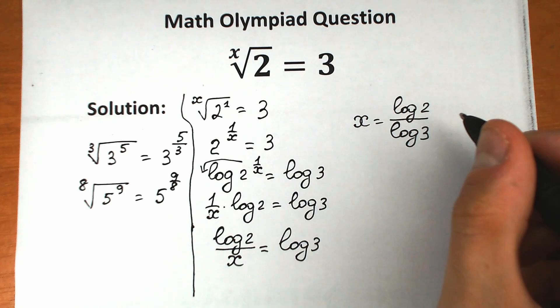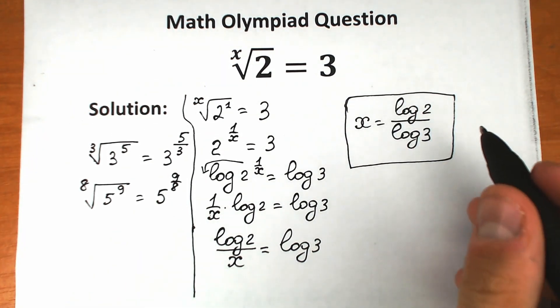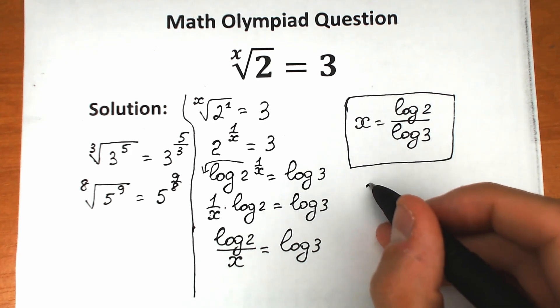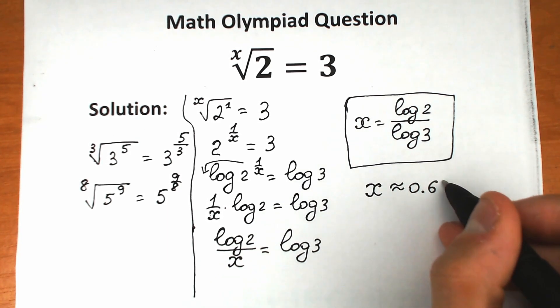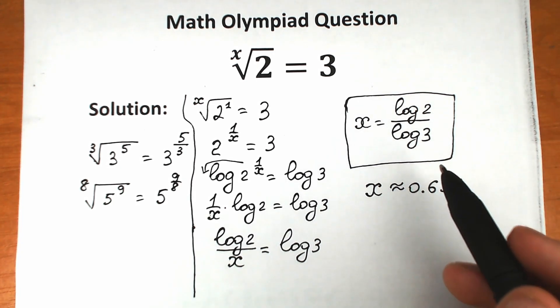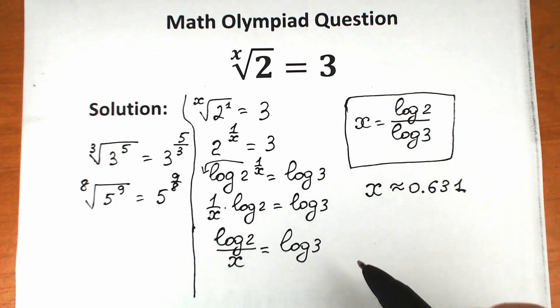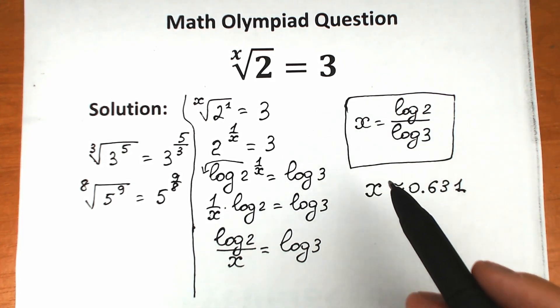And this is our answer - a pretty easy and basic challenge. I hope you understand this explanation. For those who want an approximate value, x is approximately equal to 0.631. This is for those interested in the approximate value. Maybe you'll encounter this challenge on your exam and want to write your answer correctly.